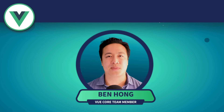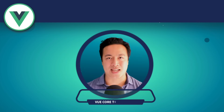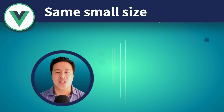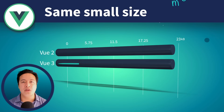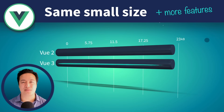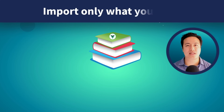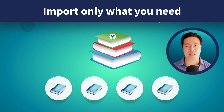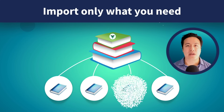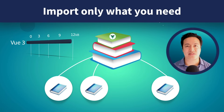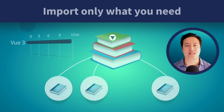Vue 2 is quite small at around 20 kilobytes gzipped at runtime, and Vue 3 is just as compact while bringing you new features and improvements. Vue 3 also allows us to only import the parts of the library that we need. As a result, whatever we don't use will be removed for us via tree shaking. This means that Vue 3 can be reduced even further to as small as 12 kilobytes gzipped.